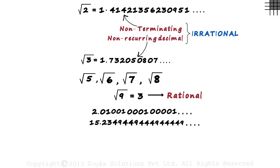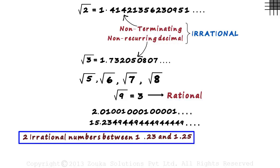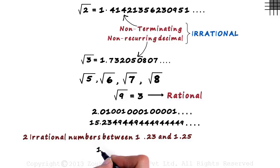Where does this concept help us? Say you are asked to find two irrational numbers between 1.23 and 1.25. Remember, 1.24 is incorrect as it is terminating. We need a non-terminating, non-recurring decimal. Yes, but we know that 1.24 is between these two numbers.